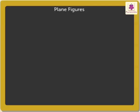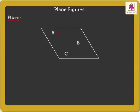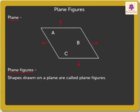We already know that a plane is a flat surface that extends in all directions. Now, do you remember what plane figures are? Yes, shapes drawn on a plane are called plane figures. They are formed by curved lines or straight lines.